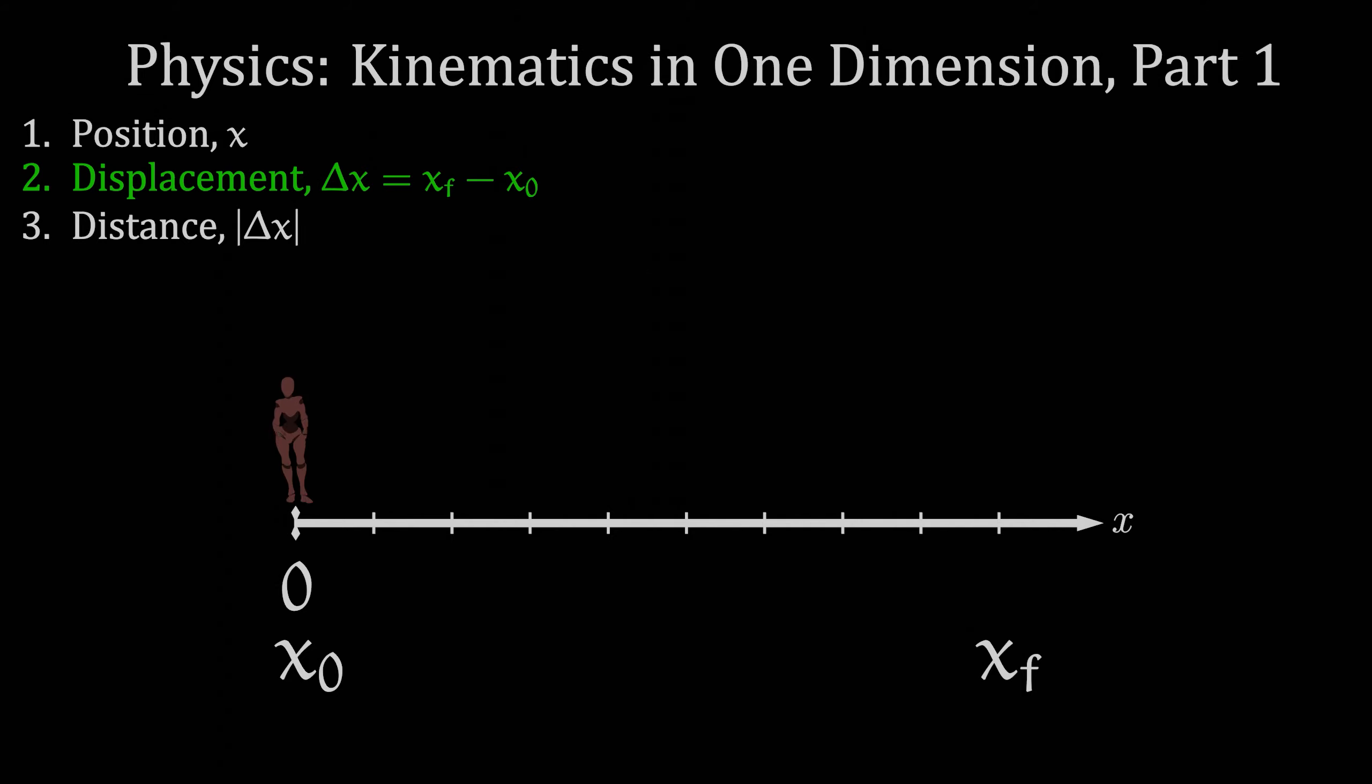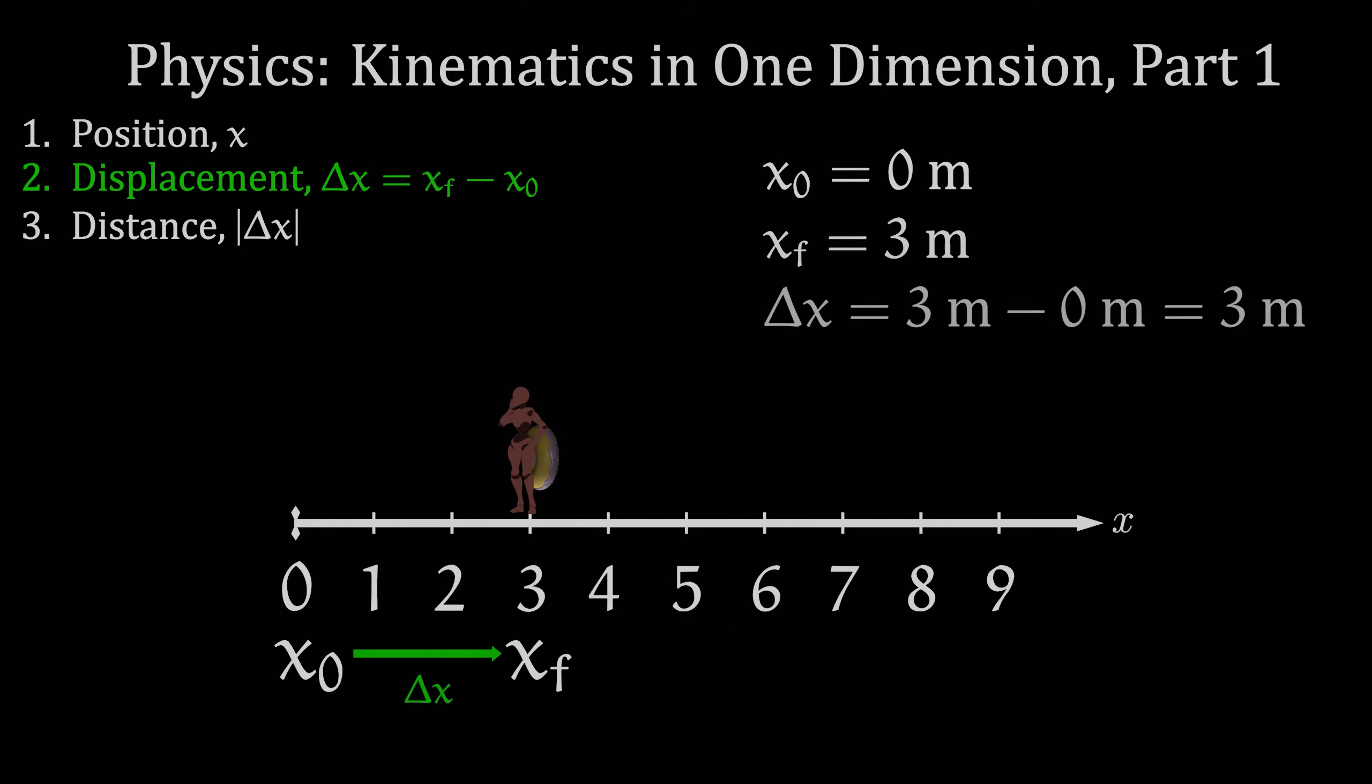If I start at the origin of our coordinate system, making my initial position x sub 0 equal to zero meters, then walk to this donut, making my final position x sub f equal to three meters on the number line, my displacement is simply delta x equals three meters minus zero meters, which equals three meters.